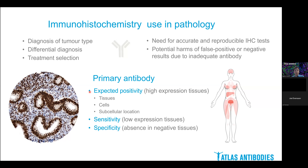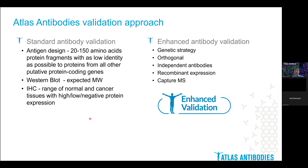It is also quite important to assess the immunochemical assay in terms of sensitivity, using low-expression tissues, and specificity — the absence of staining in negative tissues. That will help you to avoid false positive or false negative results. In order to provide accurate assessment of protein expression across different tissues and cells, validation of the primary antibody is a very important step.